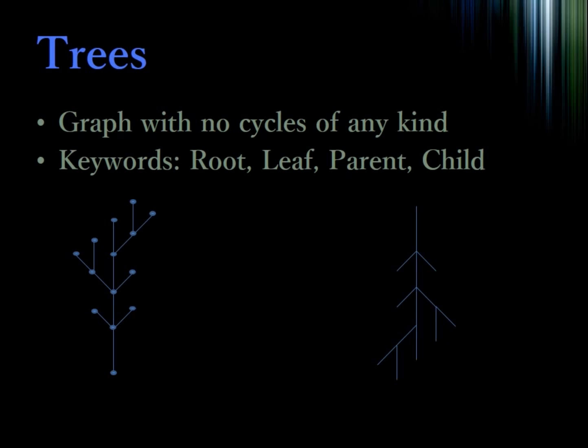So what is a tree? A tree is a graph with no cycles of any kind. If we have a tree, we can orient it any way we want. However, generally instead of orienting it from bottom to top like we think about a tree growing out of the ground, we generally orient it from top to bottom. Therefore, the root is the node at the top of the tree. The root node is an arbitrary node that we choose to be at the top. The root node will have some number of branches, which lead to other nodes, which will have still more branches, and if a node has no branches it's called a leaf.